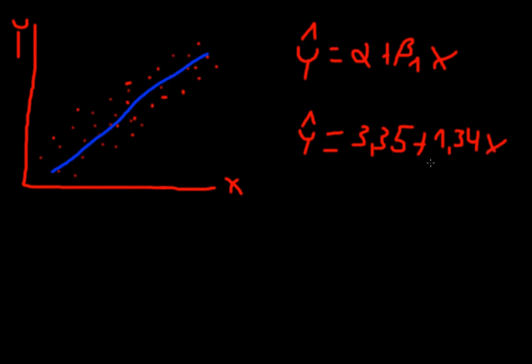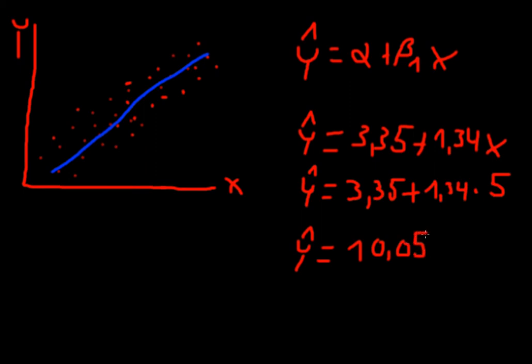Let's say you want to know the value of y if x is 5. What do you do? Simply put 5 into the equation. So this would be equal to y hat equal to 3.35 plus 1.34 times 5. Because we want to know the value of y if x is 5. And this is equal to, so y hat is equal to 10.05.